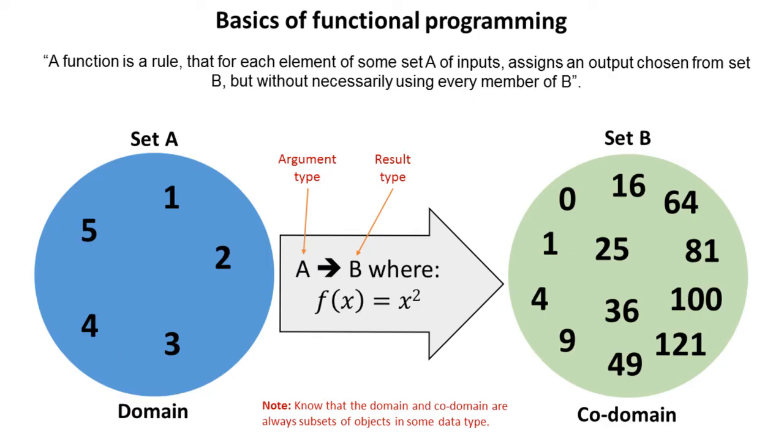the inputs, the domain. We call the set of possible values that it can draw from for its results, the codomain. We refer to this domain to codomain mapping using this notation here.